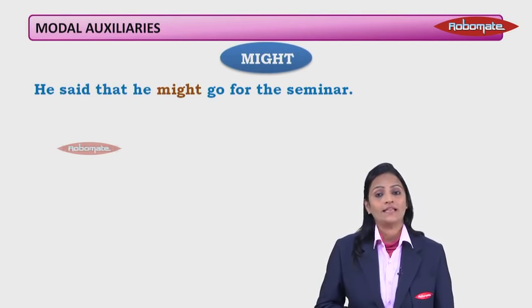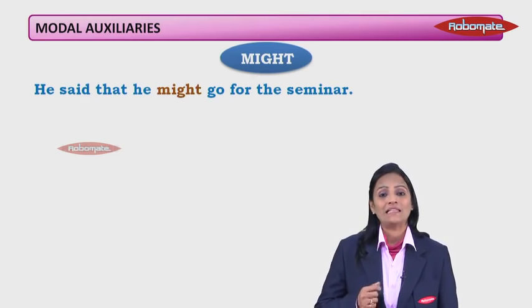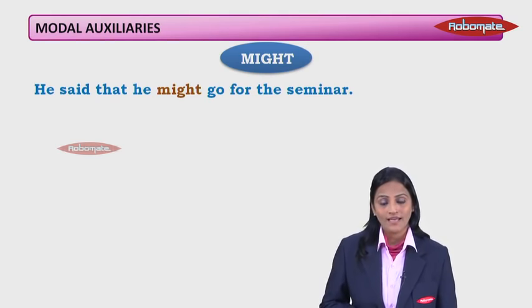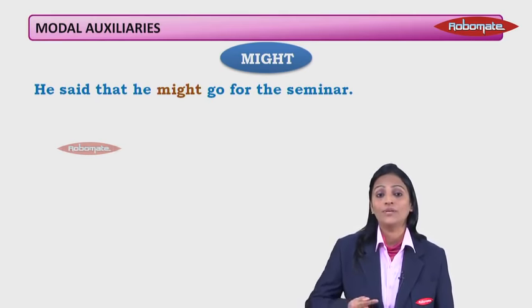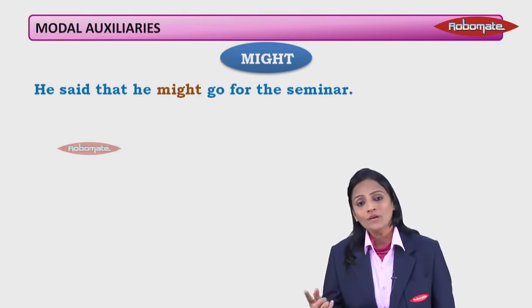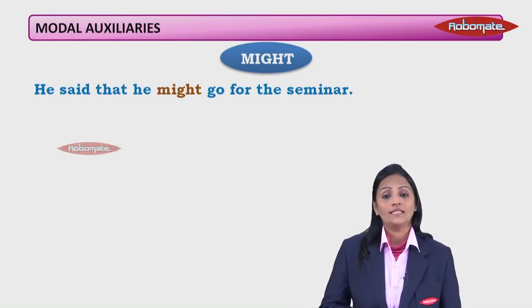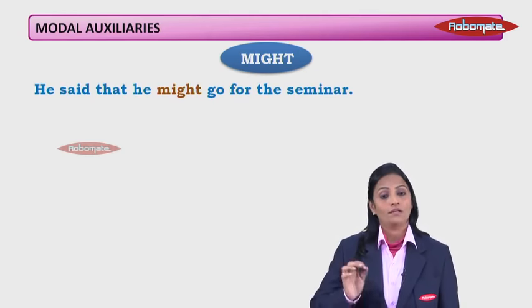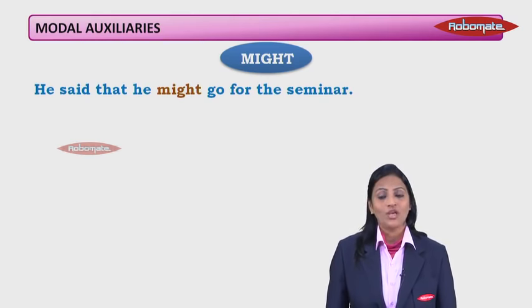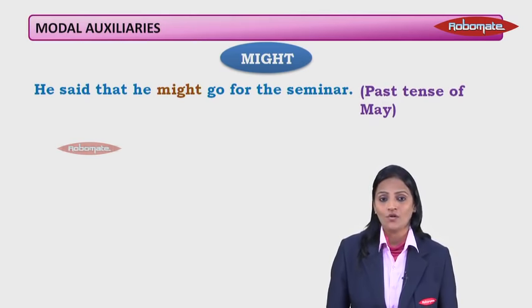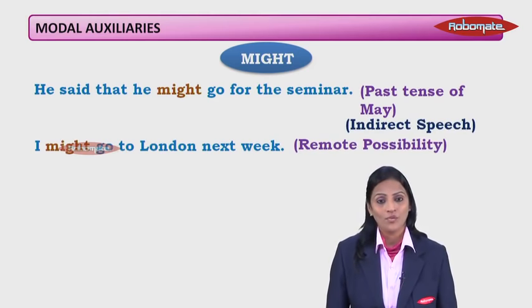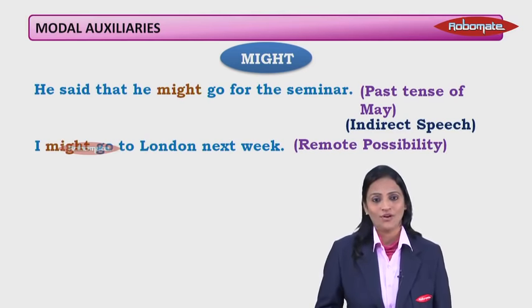'Might': 'He said that he might go for the seminar' — this is indirect speech. In direct speech it would be 'I may go for the seminar', and when changed to indirect speech 'may' becomes 'might'. So 'might' can be the past tense of 'may' in reported speech. But 'I might go to London next week' — here it is a remote possibility, something you're not very sure of.